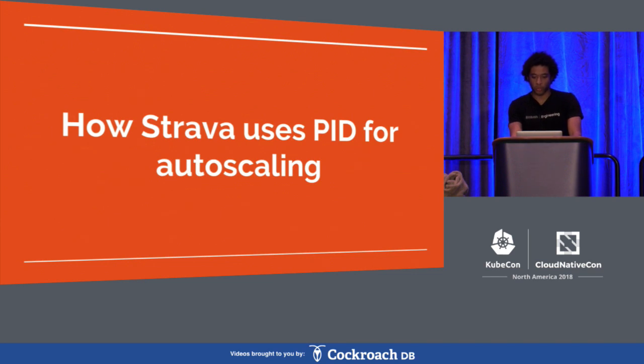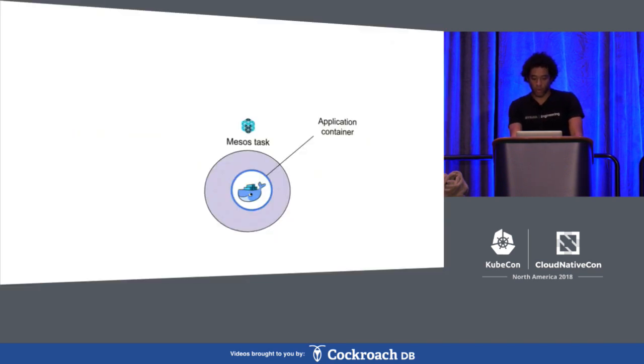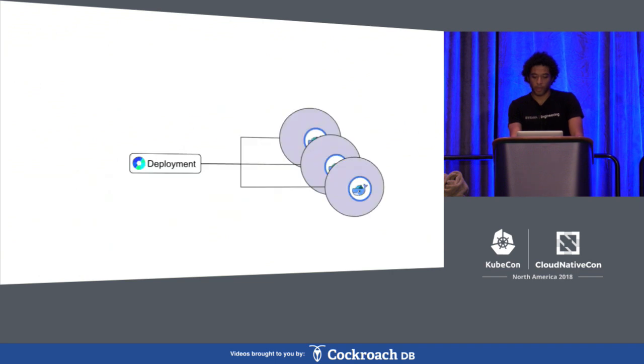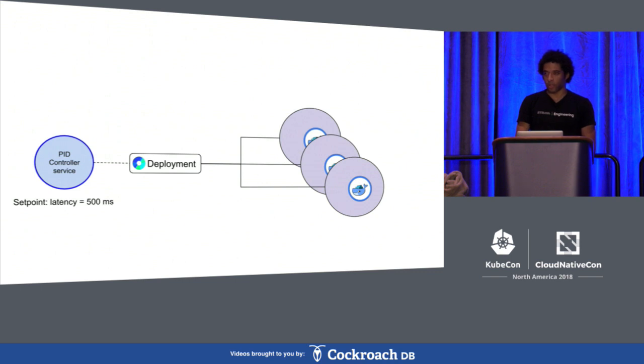So then how do we use PID auto-scaling at Strava? We deploy a lot of our infrastructure on Mesos. This would just be an application container running as a Mesos task. And the shape of those deployments will be orchestrated with Marathon. So here's just one sample deployment. And it'd be driven by a PID controller service. And in this example, let's propose that we have a set point of latency of 500 milliseconds.